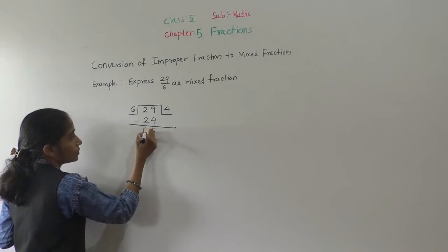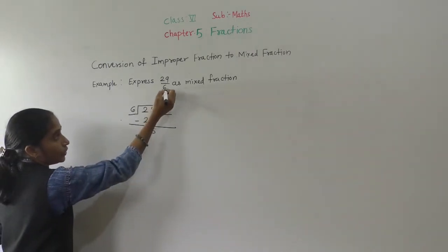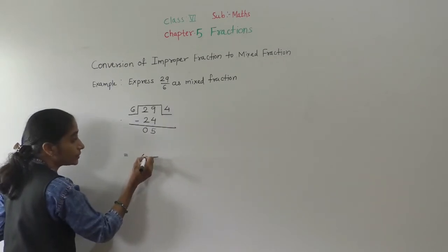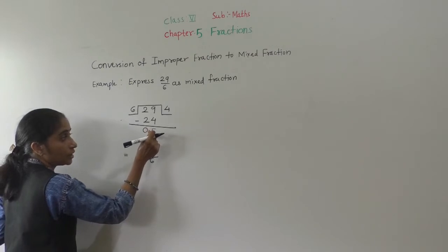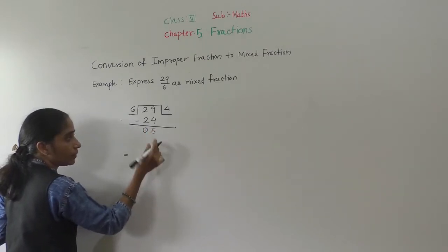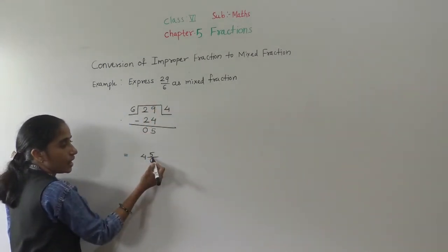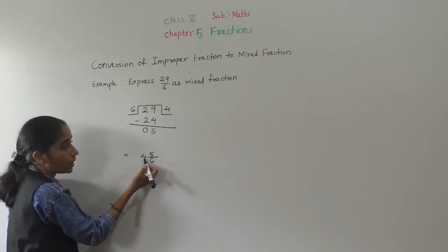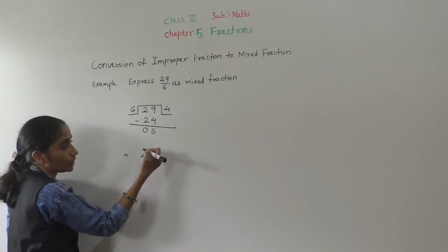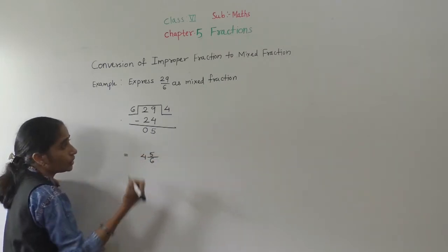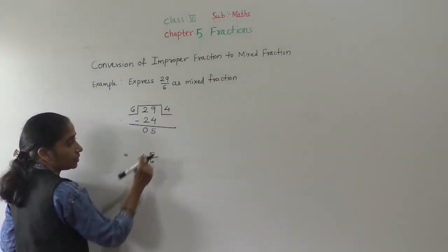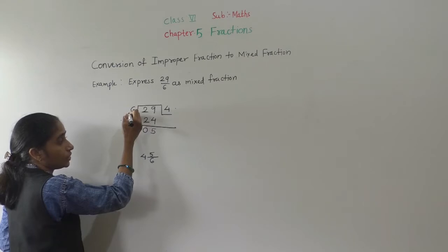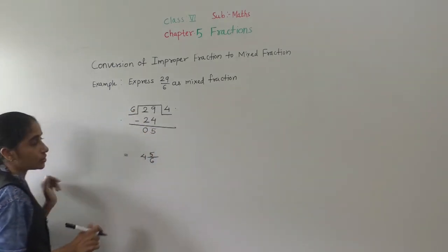9 minus 4 is 5; 2 minus 2 is 0. Now how to convert: denominator 6 stays as it is. The quotient we got — that we write as the whole number part. And the remainder we write as the numerator. So remainder is 5, denominator is 6, quotient is 4. Therefore: 4 and 5 upon 6.